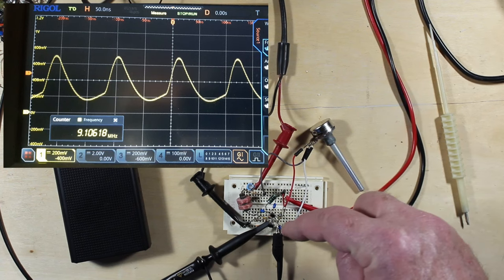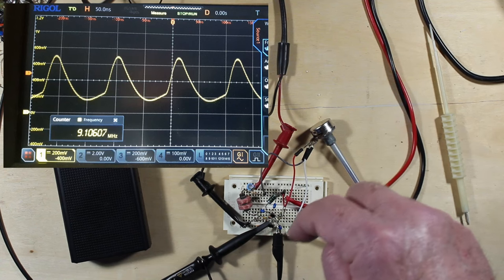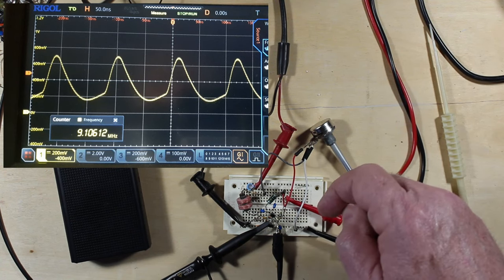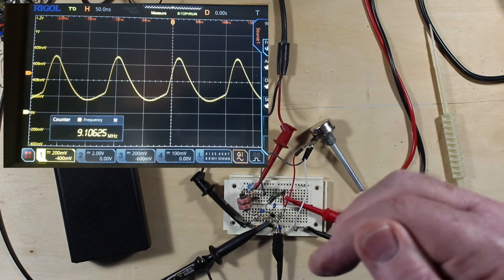But if we put a small amount of voltage into this circuitry here, and I'll show you on the circuit on the schematic diagram how we do that, we can get the frequency of this to move back and forth a tiny bit.